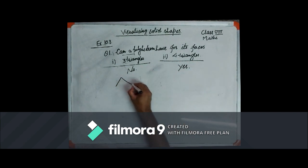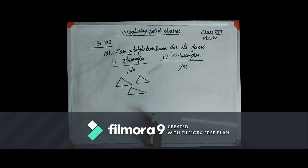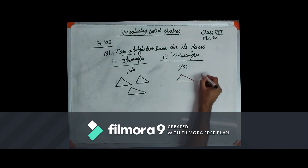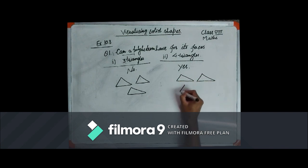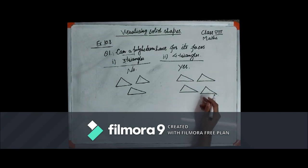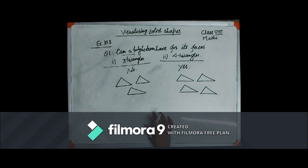We have three triangles here. These three triangles, when taken together, cannot complete a polyhedron and cannot form a closed kind of three-dimensional figure. In the case of part number two, if we have four triangles, one triangle can be taken as a base and all three remaining triangles as the lateral surfaces, so we can create a closed polyhedron. So it is possible in the case of the second part.